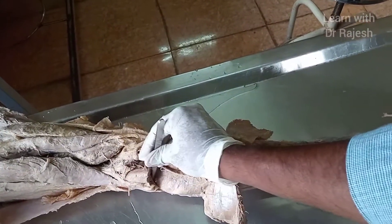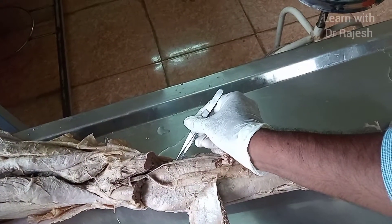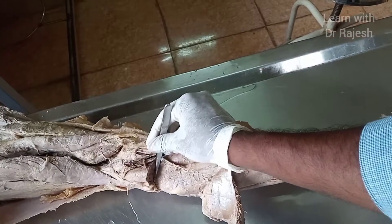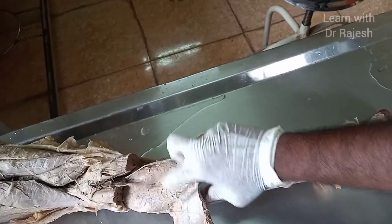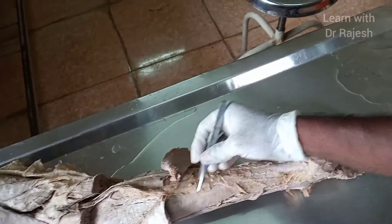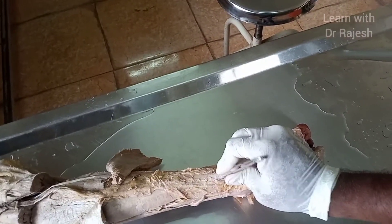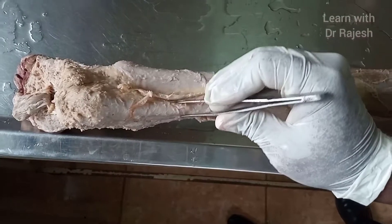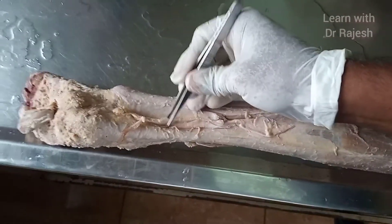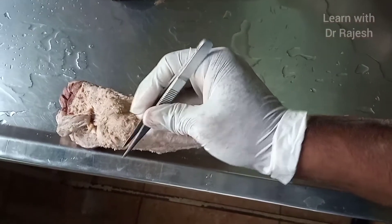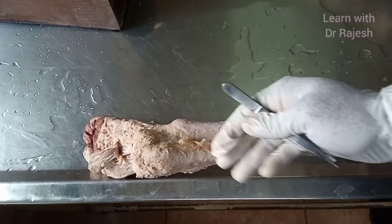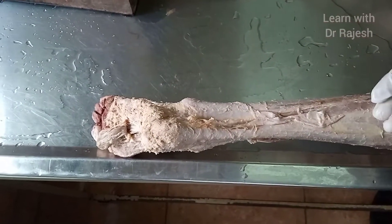The soleus takes origin mainly from the soleal line of the tibia and also partly from the fibula. It fuses with the gastrocnemius to form the common tendon called the tendocalcaneus. The insertion is common for both muscles — onto the posterior aspect of the calcaneum. Since they cross the ankle on the posterior aspect, they cause plantar flexion of the foot.